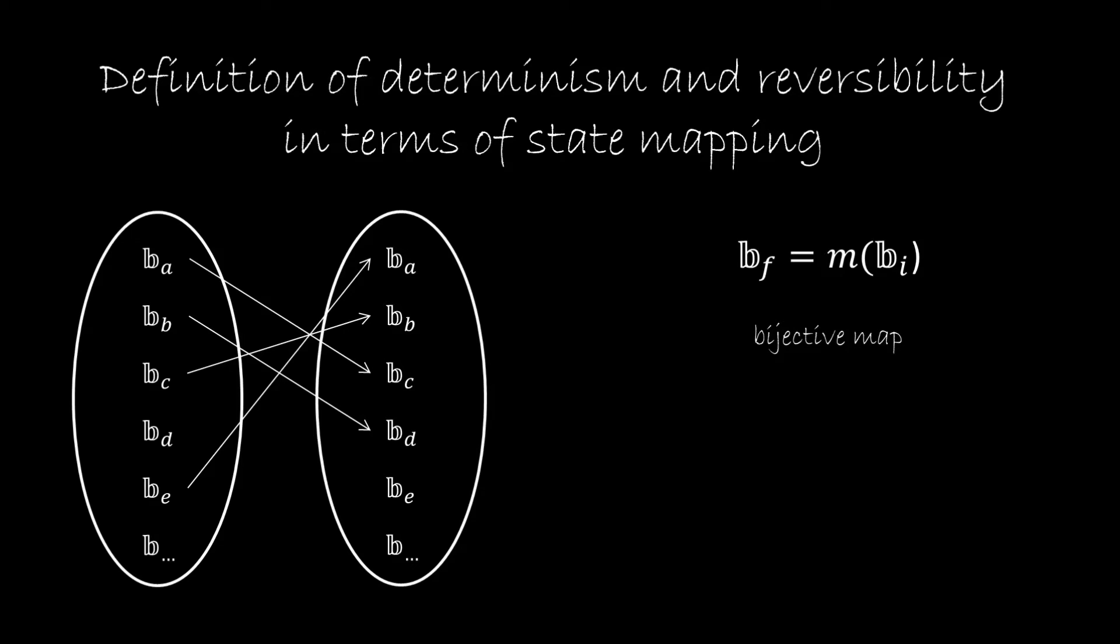So now we have to put in determinism and reversibility in terms of the state mapping. And we'll start with a space made of discrete bases, because in the discrete, it's easier to understand some of the properties. So here we have our set of initial states, and here we have the final state. And assuming determinism and reversibility basically means assuming that we have a bijective map between these states. So that for any initial state, we have one and only one final state. And for any final state, we have one and only one initial state. Okay, so that's easy, but let's look at some properties that this gives us.